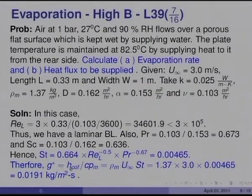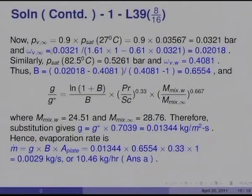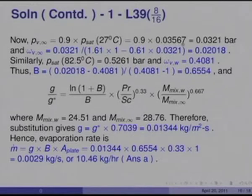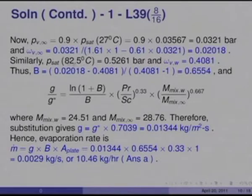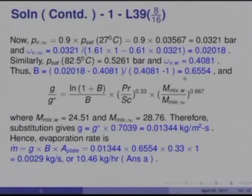To calculate the mass transfer rate, we evaluate B. P_V_infinity = 0.9 × P_sat(27°C) = 0.9 × 0.03567 = 0.0321 bar, giving omega_V_infinity = 0.02018. P_sat at 82.5°C = 0.5261 bar, giving omega_V_w = 0.4081. Therefore B = (0.02018 − 0.4081) / (0.4081 − 1) = 0.6554. This is a considerably large B for an evaporation problem.